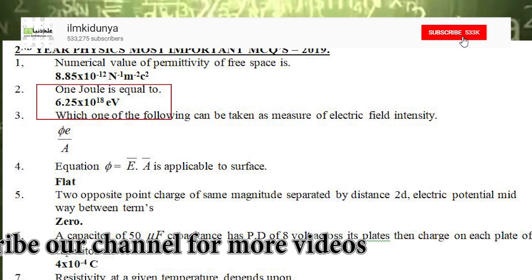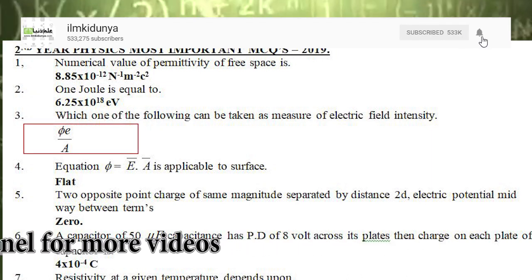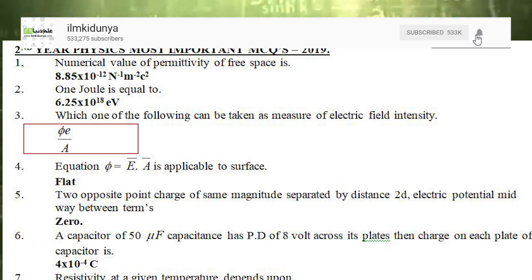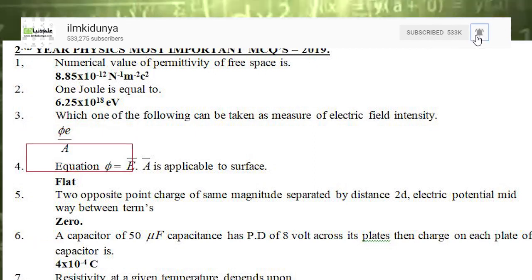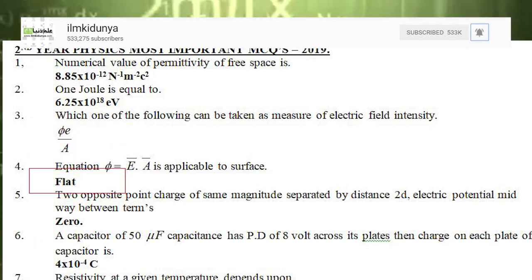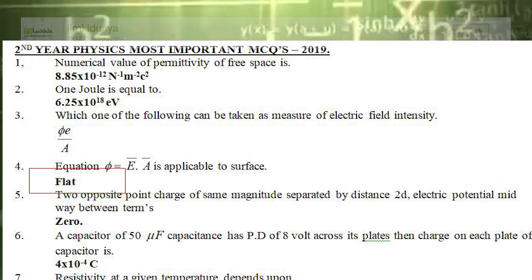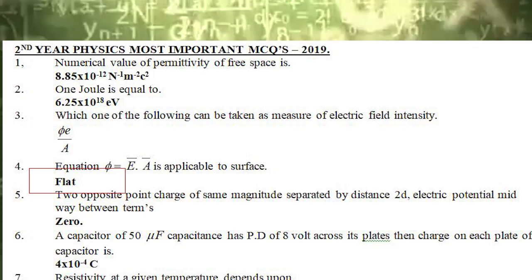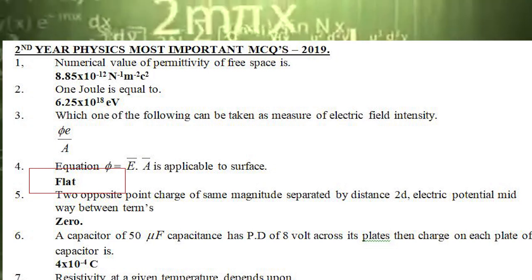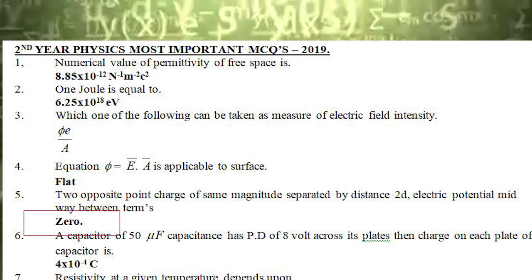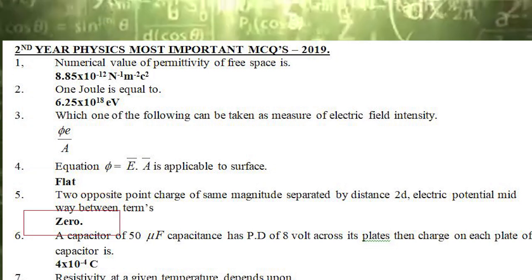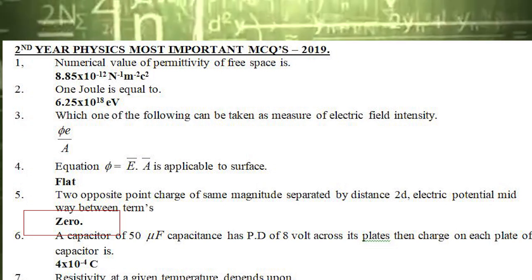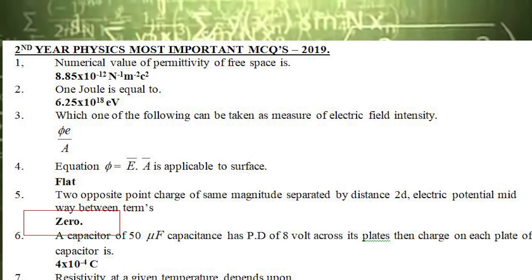The third statement is: which one of the following can be taken as a measure of electric field intensity? The correct answer is phi_E divided by A. The fourth statement is: the equation phi equals E·A is applicable to which type of surface? The correct answer is flat. The fifth statement is: two opposite point charges of the same magnitude separated by distance 2d — what is the electric potential midway between them? The correct answer is zero.